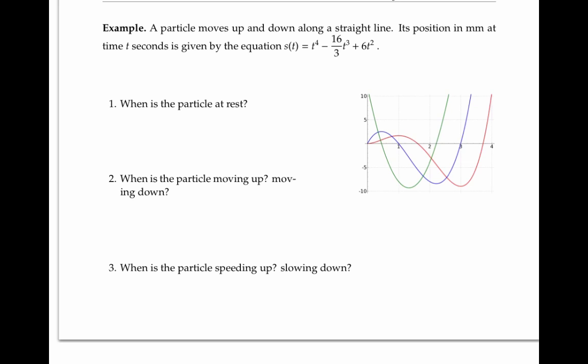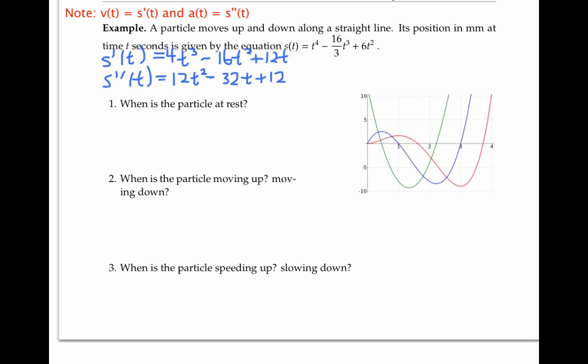Let's continue the same example with more questions. It'll be helpful to write down the velocity and acceleration functions we calculated earlier. I've also graphed position, velocity, and acceleration. Before going on, it's a fun exercise to figure out which graph is which without looking at the equations — just based on the shapes and where they're increasing, decreasing, positive, and negative. Velocity is the derivative of position, so velocity must be positive where position is increasing. Acceleration is the derivative of velocity, so acceleration must be positive where velocity is increasing. The only consistent labeling makes the red one position, the blue one velocity, and the green one acceleration.